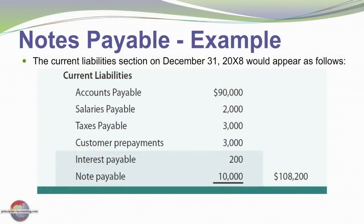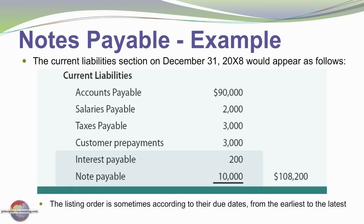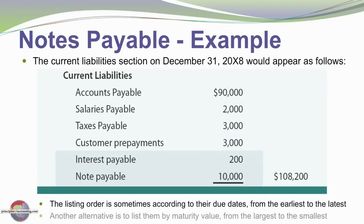Let's see how notes payable appear on the balance sheet. Here's an example of a current liabilities section. Since the $10,000 note is due within the current operating cycle or current year, it appears as a $10,000 note payable, and we also show $200 of accrued interest. This is the December 31 disclosure showing both the note and the accumulated interest. Current liabilities are typically ordered by due date from earliest to latest, though another alternative is by maturity value from largest to smallest.